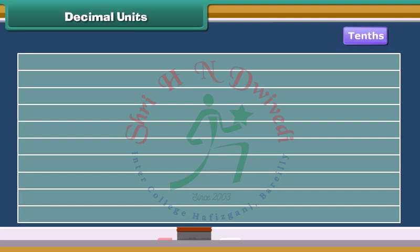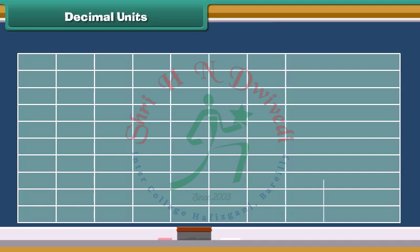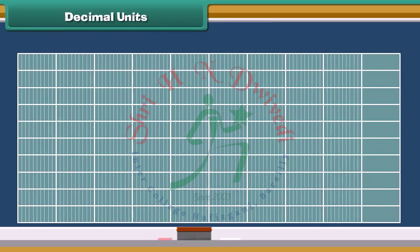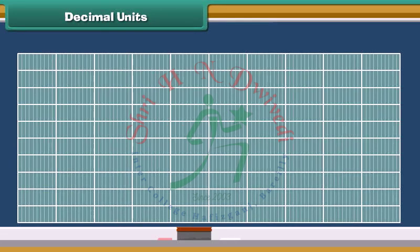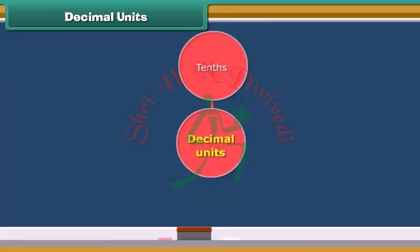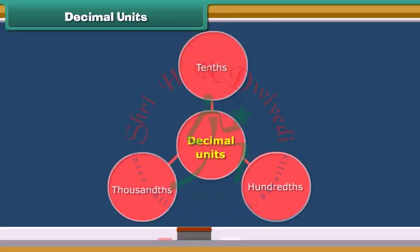Now, if we divide those rectangles into 10 smaller rectangles, then we have 10 times 10 or 100 parts of 1, that is hundredths. Dividing those rectangles into 10 smaller rectangles, we have 10 times 100 or 1000 parts of 1, that is thousandths. So, the fractions tenths, hundredths, thousandths are called decimal units.